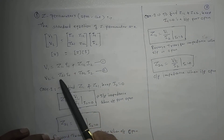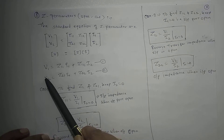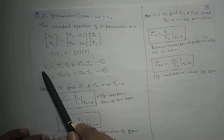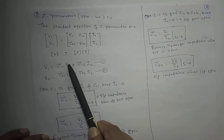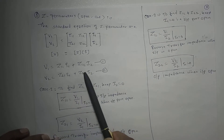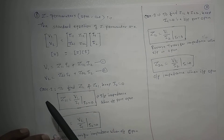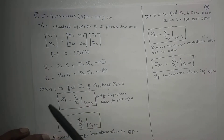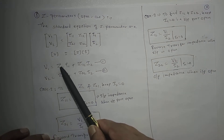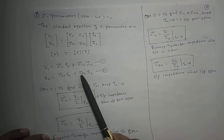These are the two standard equations of Z parameters. V1 is expressed in terms of I1 and I2, and V2 is expressed in terms of I1 and I2, which gives us the Z parameters. Now to understand what is meant by Z11, Z12, Z21, and Z22, we consider two cases.